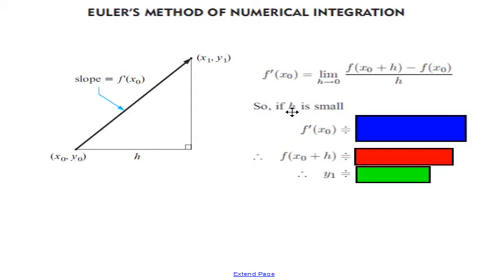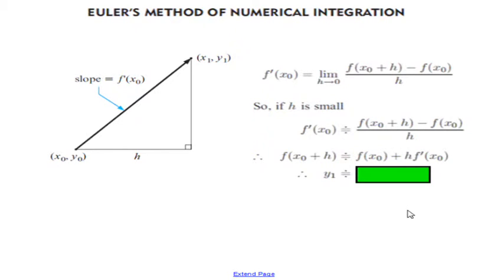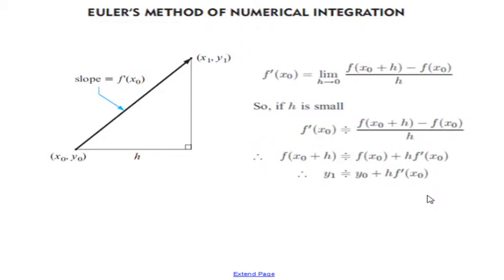Now as h approaches 0, so h is getting smaller and smaller, then the value of f'(x0) is approximately this value here. We can rearrange this equation to make f(x0 + h) the subject. So h will multiply f' and the minus f(x0) will add. So we end up with that expression there. So f(x0 + h) — we're ending up with the y coordinate for the next point, which is our guess point. So y1 equals y0 plus h times f'(x0). The guess for the y coordinate equals the previous y coordinate plus the size of the gap times the derivative at the previous x value.